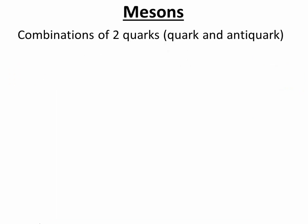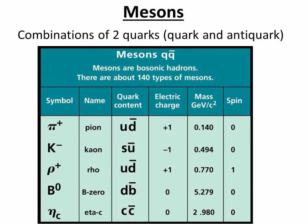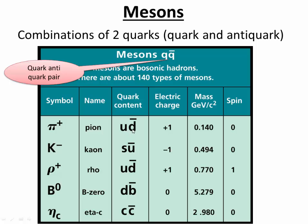Mesons are a combination of two quarks — basically a quark and an anti-quark. Here we have a table of mesons. Notice it's always a quark and an anti-quark. For example, a pi-plus, also called a pion, is an up and anti-down. A k-minus kaon is a strange and anti-up. A rho-plus is an up and anti-down. The B0 is a down and anti-bottom. The eta-c is a charm and anti-charm.